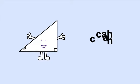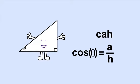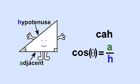CAH gives another ratio because adjacent over hypotenuse equals cosine.